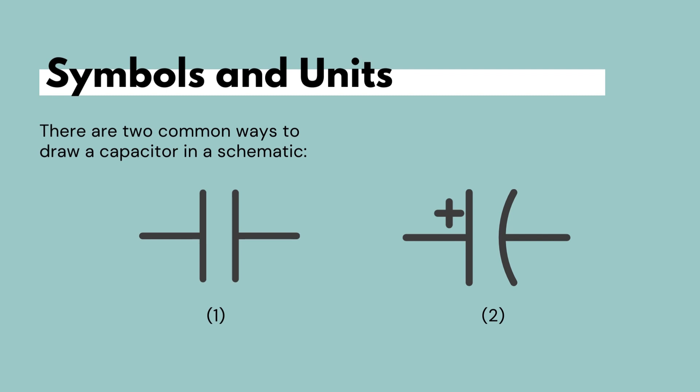As for the second symbol, the one with the curved line, it indicates that the capacitor is polarized. And polarized capacitors probably mean that they are an electrolytic capacitor. And we will talk about that more later when we talk about the different types of capacitors.